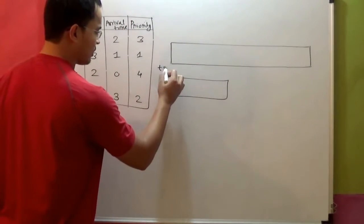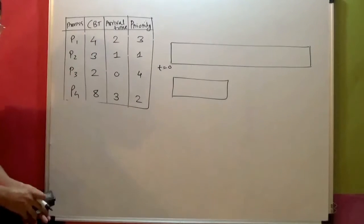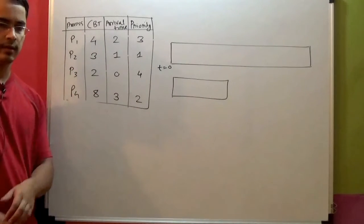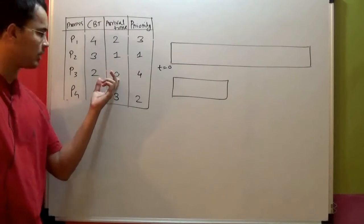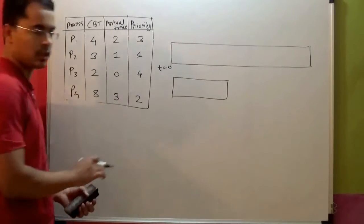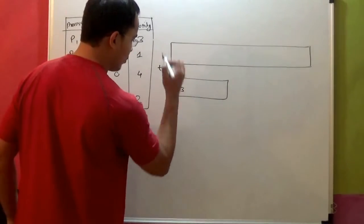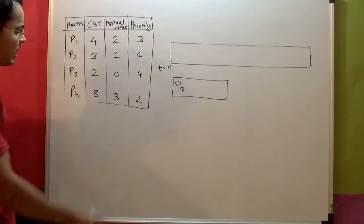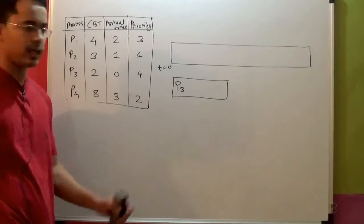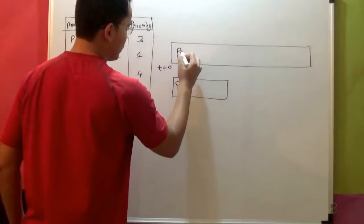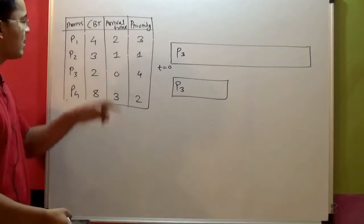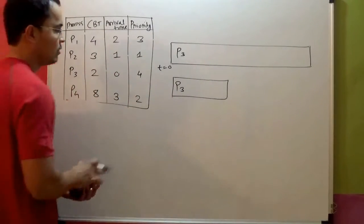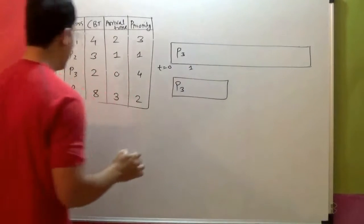Let's consider at time equal to 0 seconds. At time equal to 0, which process has arrived? There is only one process that has arrived at time equal to 0 and that is P3. So P3 irrespective of its priority will get the CPU. So P3 goes in. Now this solution will be there till time equal to 1 second.